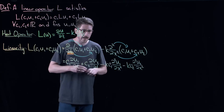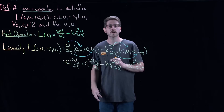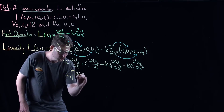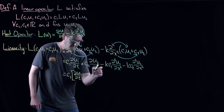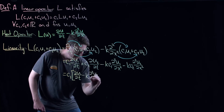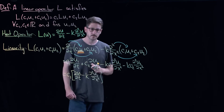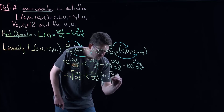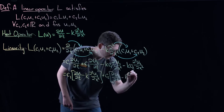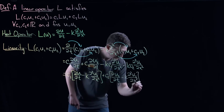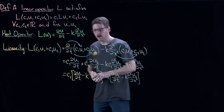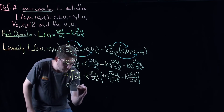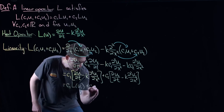Everything is going well. Now I'd like to group like terms according to whether they have C1 or C2. Factoring out C1 gives C1 times (∂U1/∂t − k·∂²U1/∂x²), and factoring out C2 gives C2 times (∂U2/∂t − k·∂²U2/∂x²). But that's exactly C1·L(U1) plus C2·L(U2), which is precisely the linearity property we wanted to verify.